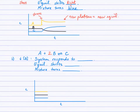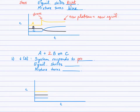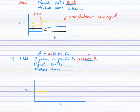Let's try a different concentration stress: decrease the concentration of B. According to Le Chatelier's Principle, the system will respond to offset or counter the stress — do the opposite. If the stress is decreasing B, then the system will respond to produce B. Which direction — forward or reverse — will produce more B? The reverse direction. So the equilibrium shifts left, because the reverse direction causes more A and B to form.